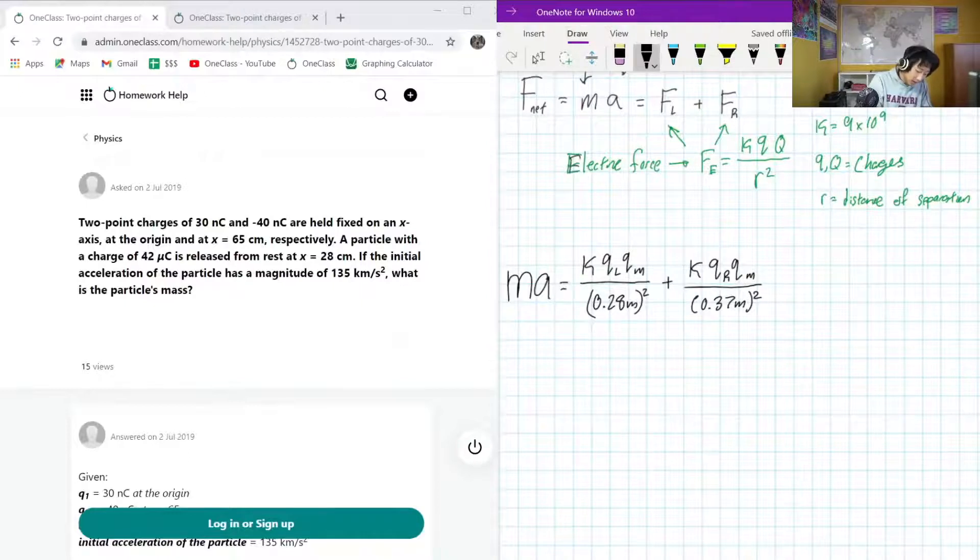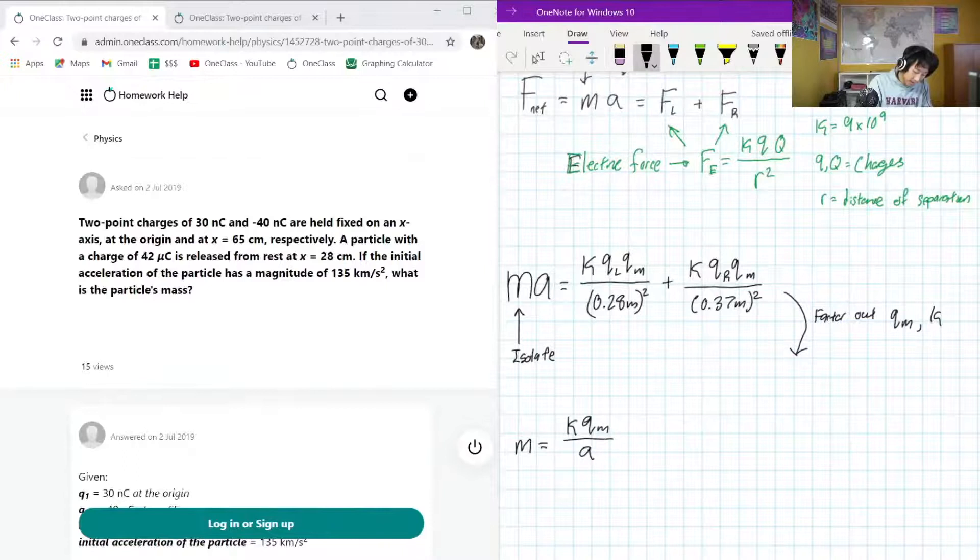So, that will be 0.37 meters on the bottom. And what we can do here is, since we're trying to isolate this, we can also factor out the K and QM. Factor out QM and K, because they're the same. So, here, to isolate that, we'll have, whoops, we're not isolating A, we're isolating M. We are going to have K and QM factored out. When we isolated M, well, we just divide both sides by A.